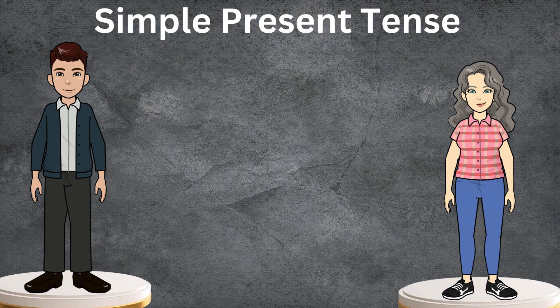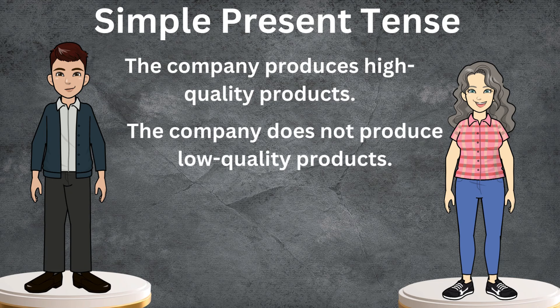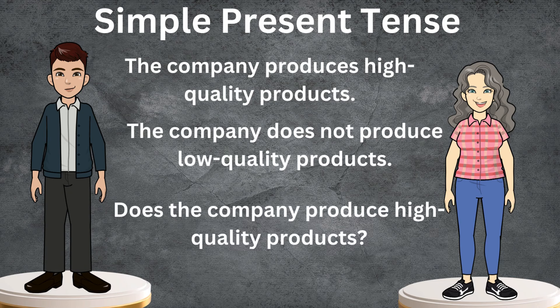Our next one is: the company produces high quality products. Because in this sentence there is a singular noun or singular subject — which is 'the company' — so we add S to the base form of the verb. The negative sentence would be: the company does not produce low quality products. The interrogative one is: does the company produce high quality products?